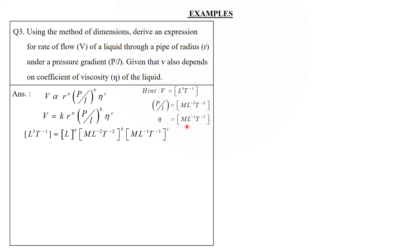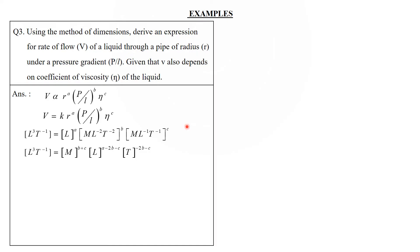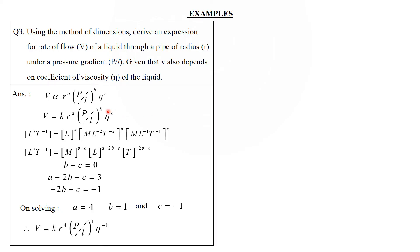After substituting and rearranging: M: b + c = 0; L: a − 2b − c = 3; T: −2b − c = −1. Solving gives a = 4, b = 1, c = −1. Therefore V = k · r⁴ · (p/l)¹ · η⁻¹, which rearranges to V = k·r⁴(p/l)/η — consistent with Poiseuille's formula.